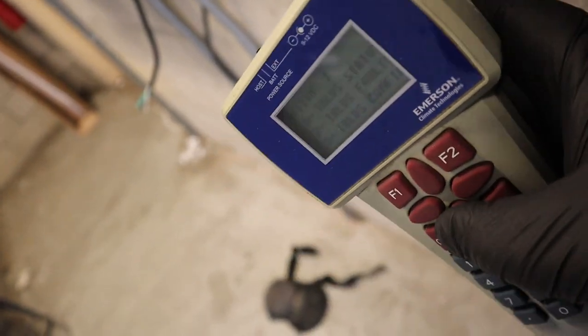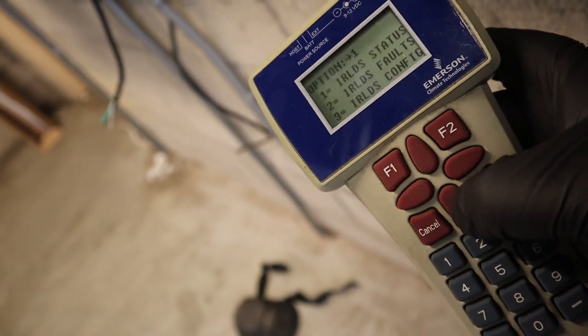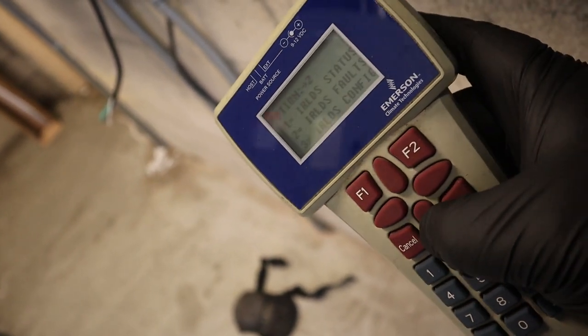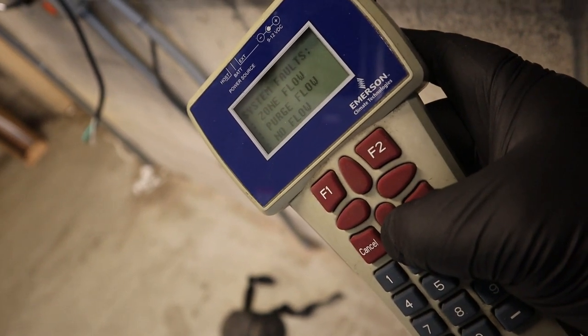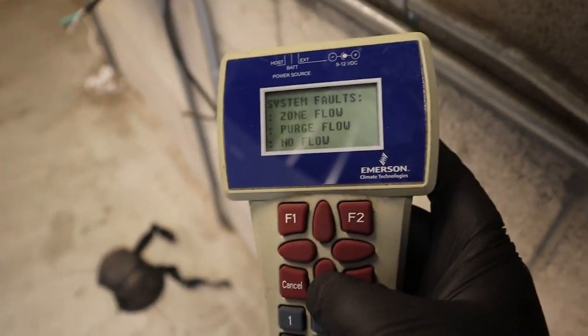All right, so now we're in. So you have the three options: the status, the faults, and configuration. So right now I'm trying to see the faults. Number two, go down. And these are my faults: zone flow, purge flow, no flow.